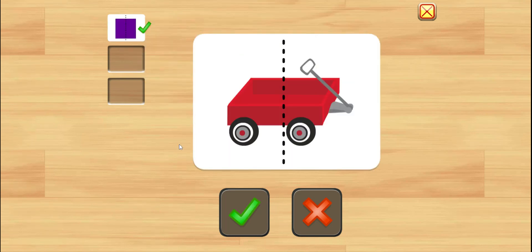Is this picture symmetric? Hmm, on this side we have the back of the wagon, and on this side it looks different. There's a handle that you pull. It doesn't look the same on each side. I don't think it's symmetric. No.